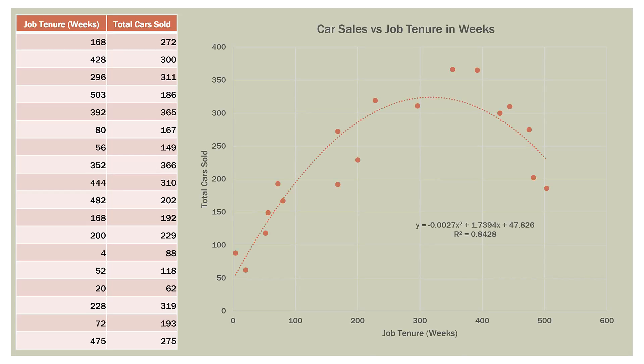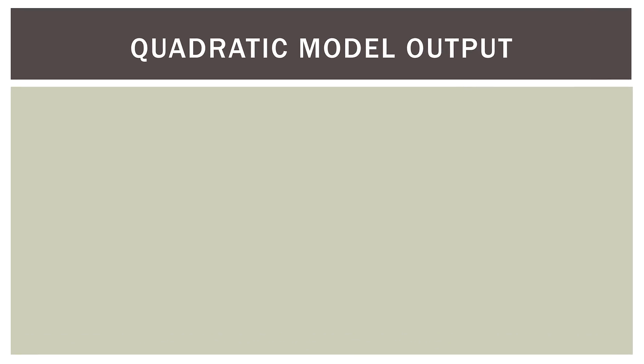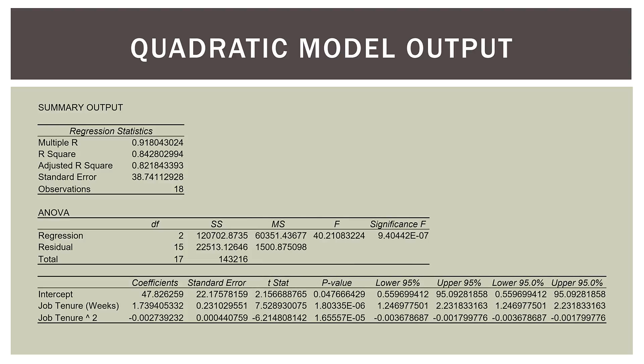We could fit the quadratic model, and this is what we would get. You can see that it fits the data pretty well. We have a very high R-squared value of 0.8428, meaning that using the quadratic model, over 84% of the variance in total cars sold is explained by job tenure. But what if we looked at it differently — on the left-hand side, one linear model, and on the right-hand side, a different linear model? This is the piecewise regression model. Let's take a look at the quadratic model output.